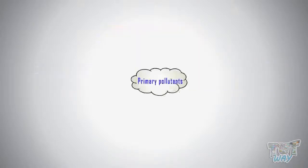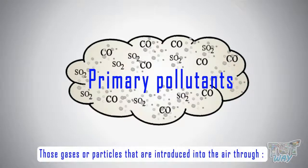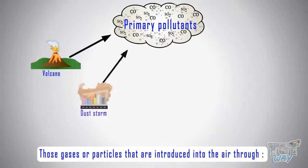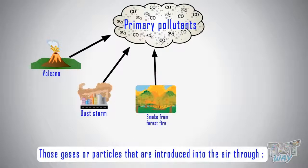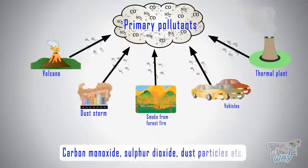Primary pollutants are those gases or particles that are introduced into the air through activities like volcanoes, dust storms, smoke from forest fires, vehicles, and thermal power plants. They are gases like carbon monoxide, sulfur dioxide and dust particles.